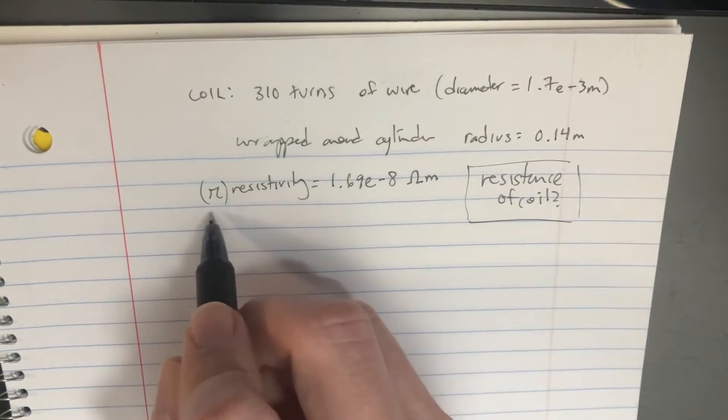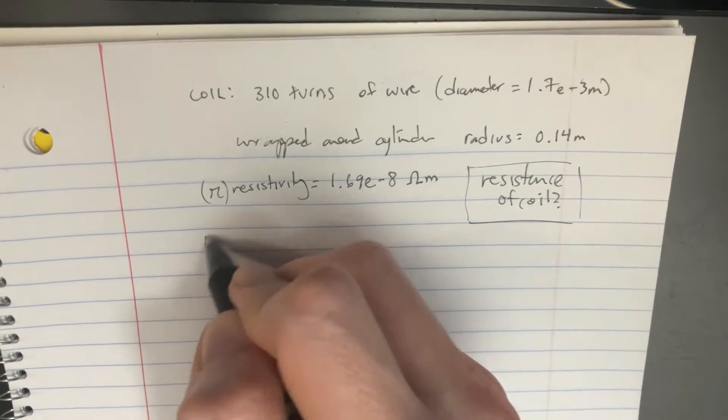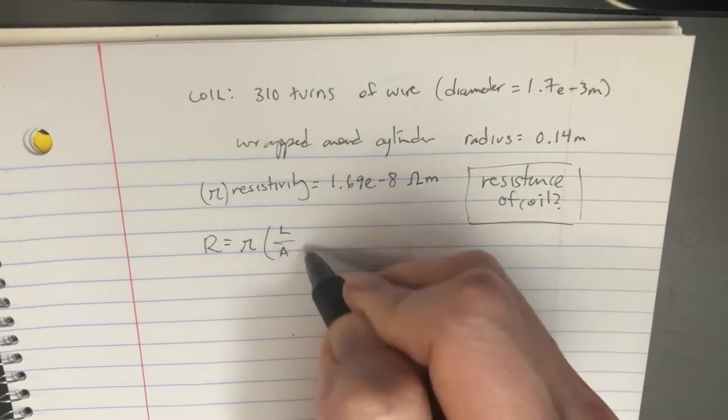Well, first we're going to take a look at the equation for resistance. That's going to be R equals resistivity times length over the area.